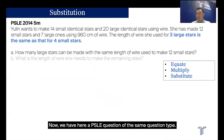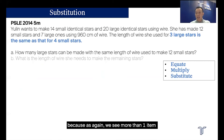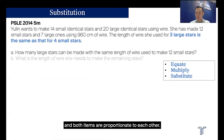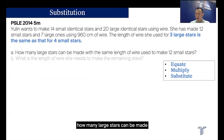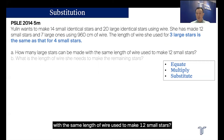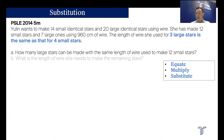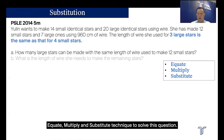Now we have a PSLE question of the same type. This appeared in 2014 and similarly requires the EMS technique, because again we see more than one item — large and small stars — and both items are proportional to each other. For part A, the question asks how many large stars can be made with the same length of wire used to make 12 small stars. Let's apply the Equate, Multiply, and Substitute technique to solve this question.